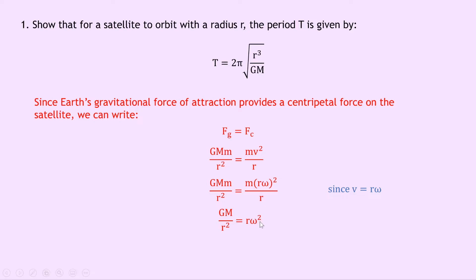Now remember that omega equals 2π over T, so we get GM over r squared equals r times 2π over T, all squared, since omega equals 2π over T. Now we've got all the symbols in terms of T, 2π, G, M and r in our expression. So now what we can do is divide both sides by r to get this over to the other side, and then swap both sides. So we've got 2π squared over T squared, which is equal to GM over r cubed, because remember we divided both sides by r.